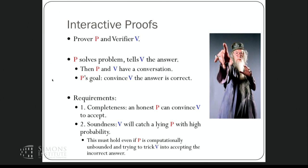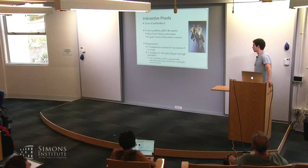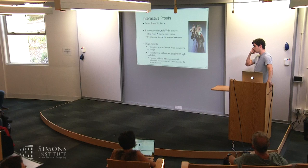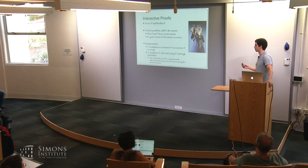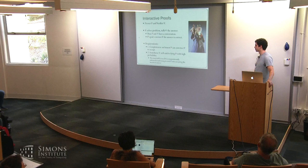If the prover returns an incorrect answer, the maximum probability with which the prover can convince the verifier to accept is called the soundness error of the protocol. We want the soundness error to be as low as possible — very close to zero ideally. In practice for cryptographic applications, you might want something like 2 to the minus 120. In all the protocols we'll see today, you can drive the soundness error as low as you want, possibly with just some additional constant factor overhead.